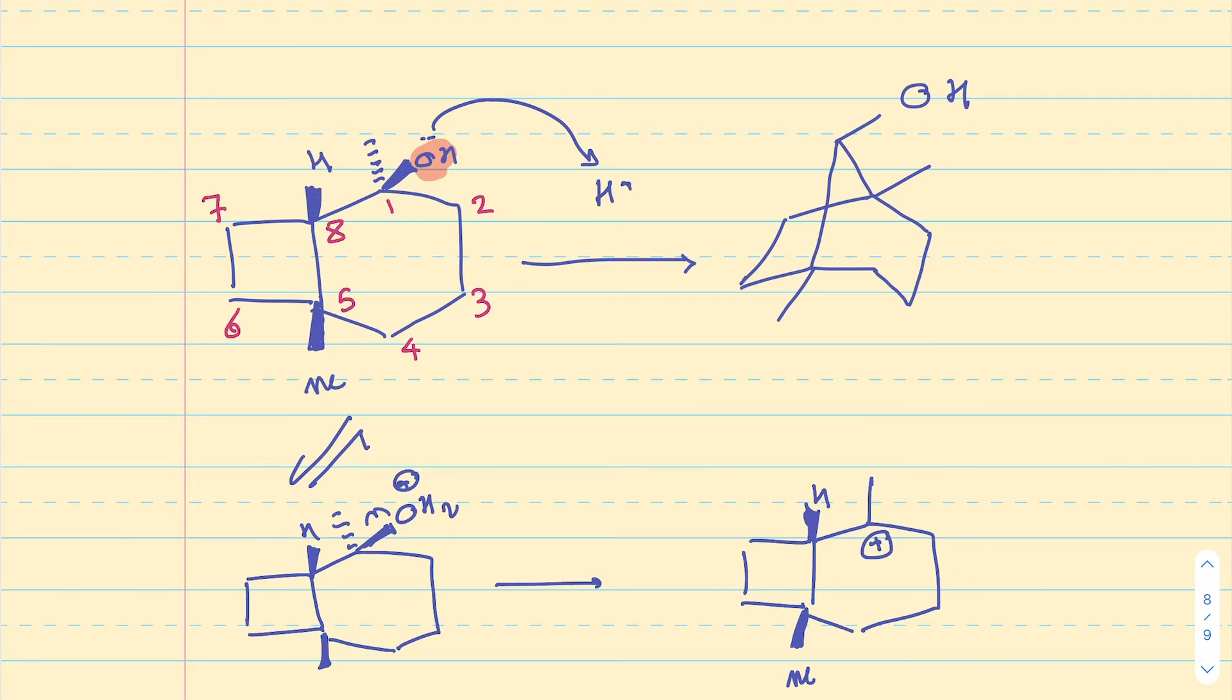Now, as for how that carbocation is going to rearrange, what I'm going to do is that I'm going to number the carbons of the starting material. I'm going to use a different color such as red. So, let's say one, two, three, four, five, six, seven, and eight. Now, notice that I'm not numbering the two methyl groups and I'm not doing that on purpose.